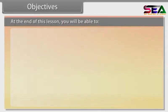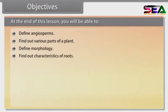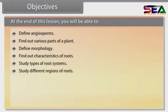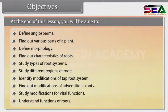Objectives. At the end of this lesson, you will be able to: define angiosperms; find out various parts of a plant; define morphology; find out characteristics of roots; study types of root systems; study different regions of roots; identify modifications of tap root system; find out modifications of adventitious roots; study modifications for vital functions; and understand functions of roots.